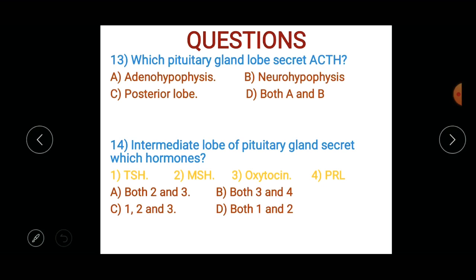The intermediate lobe of the pituitary gland secretes which hormone? Options: PSH, MSH, oxytocin, or PRL. Answer choices: both two and three, both three and four, one two and three, or both one and two.